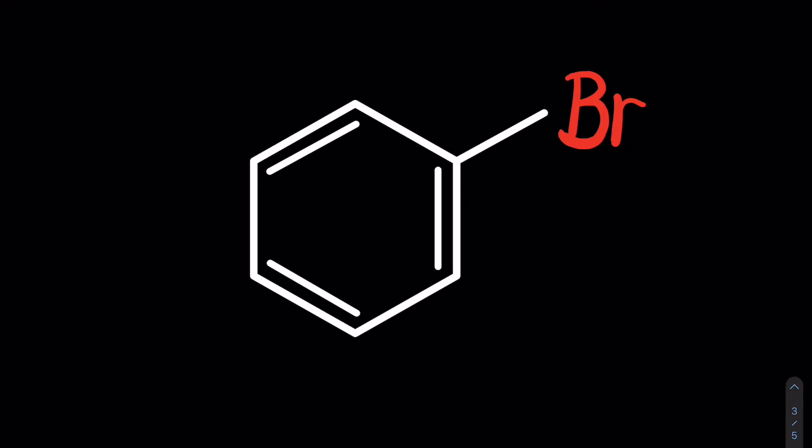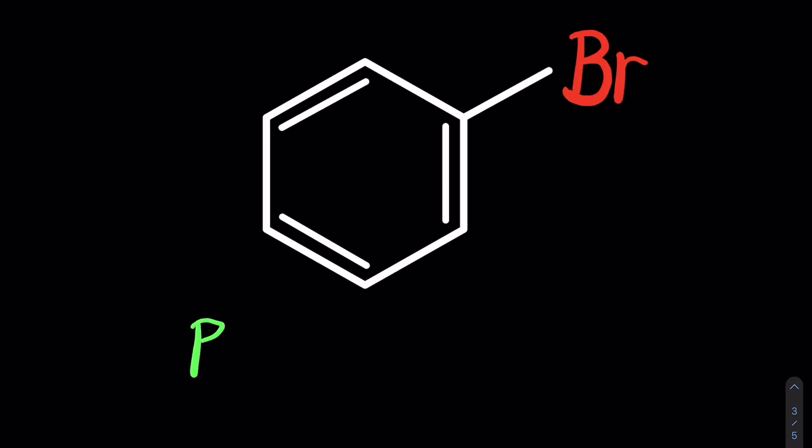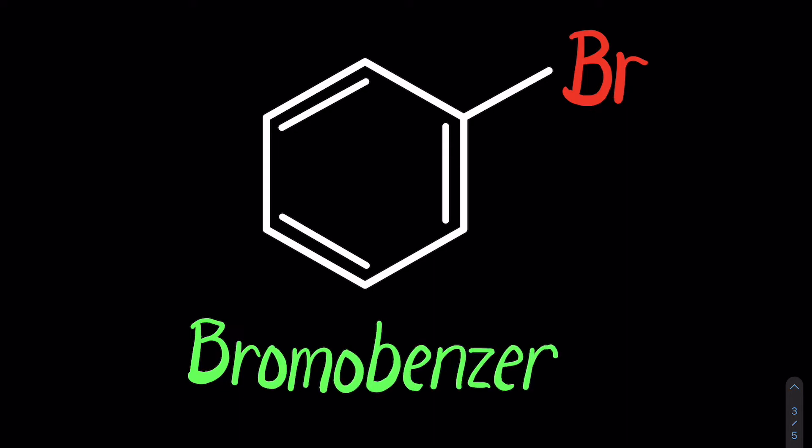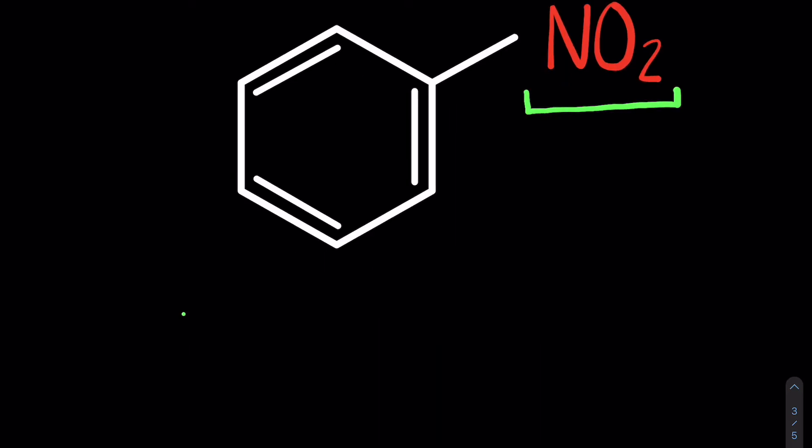All right, so now the fun stuff—nomenclature practice. Let's hop into a bunch of examples, run through how to use the ortho-meta-para naming system as well as the systematic names. This is one of the most simplistic names you will receive in organic chemistry: bromobenzene. This group is a nitro group. So when naming, it's just nitro. So in this case, it'd be nitrobenzene.